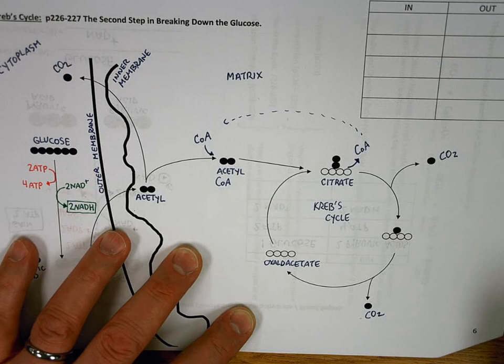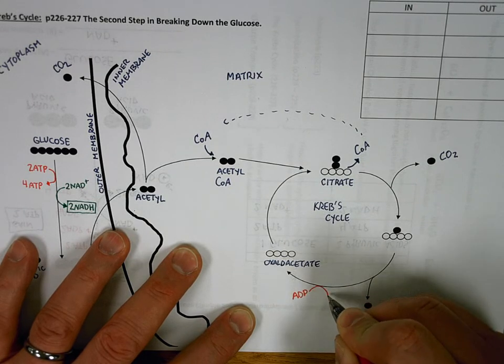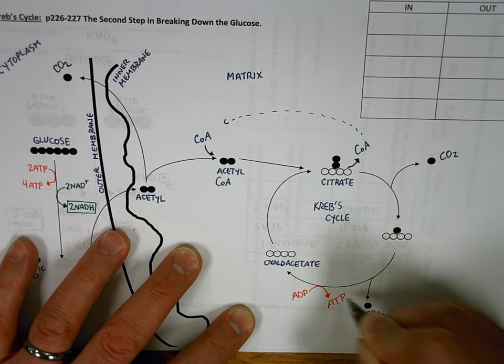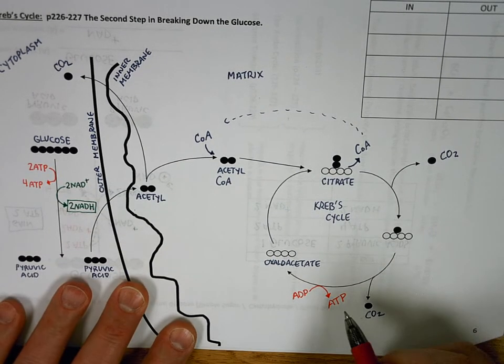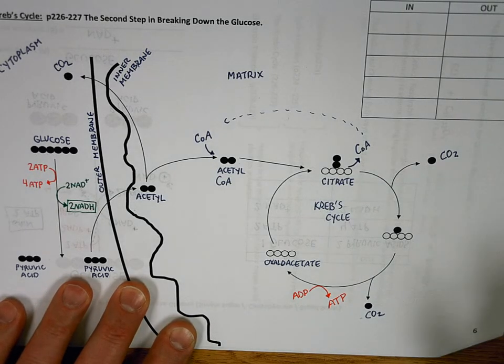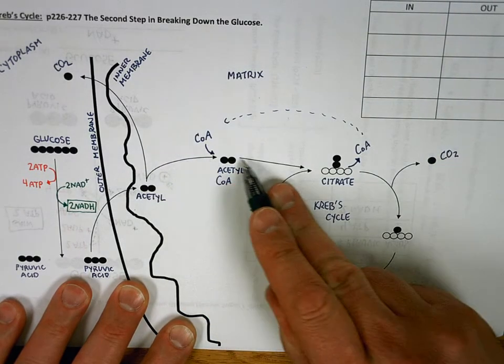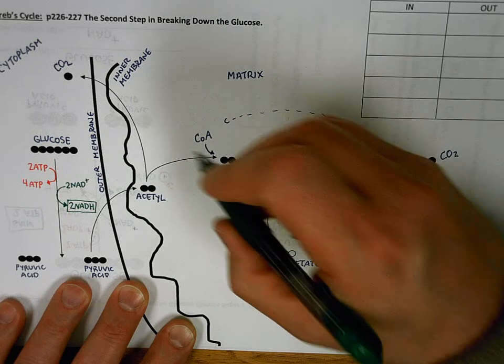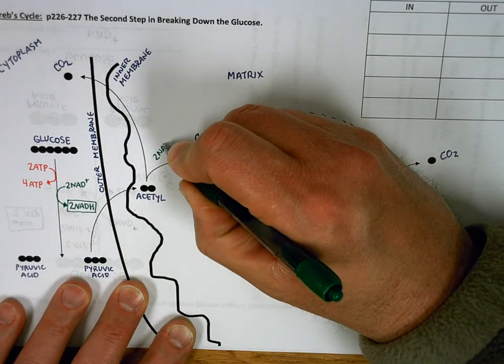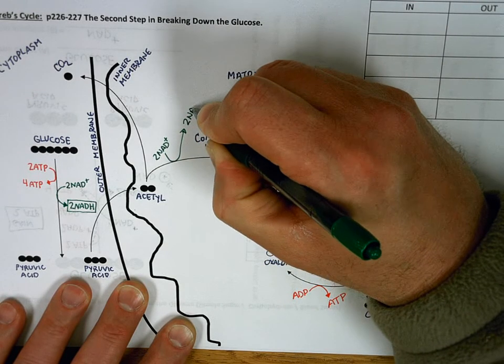You might say, what's the sense of that? We're right back where we started. Well, in this process, you can rephosphorylate an ADP into an ATP. That's one good thing. And also, along the way, we have loaded up some NAD with electrons. For example, right in here, during this pathway, two electrons are picked up. So we get another NADH here.